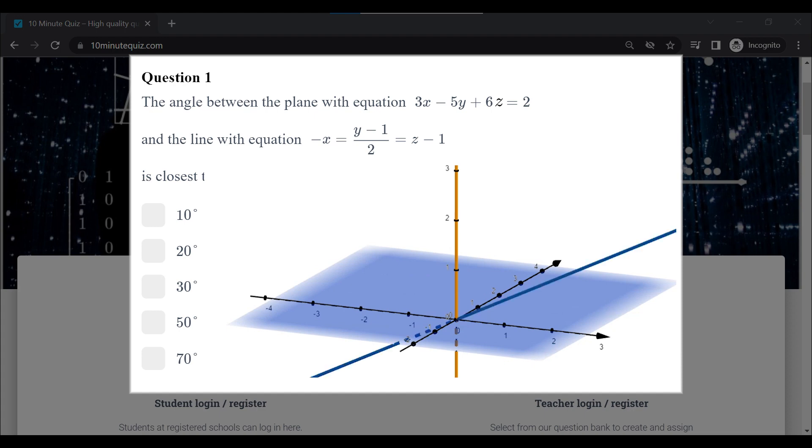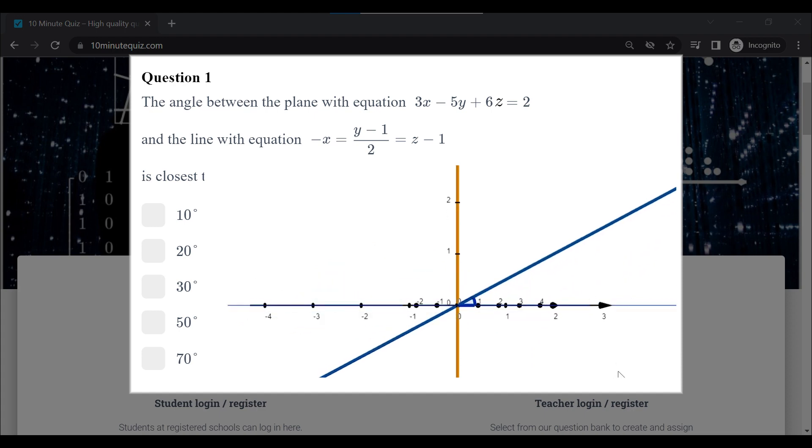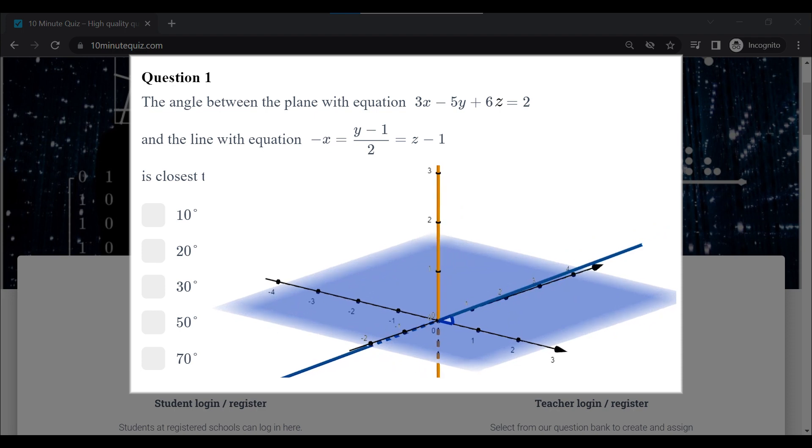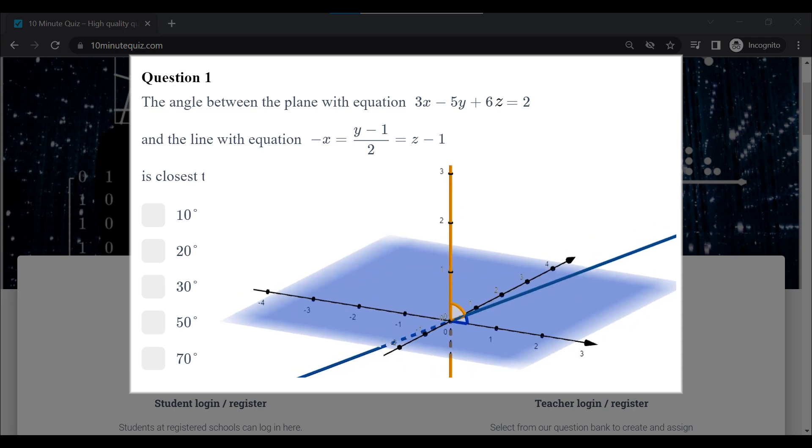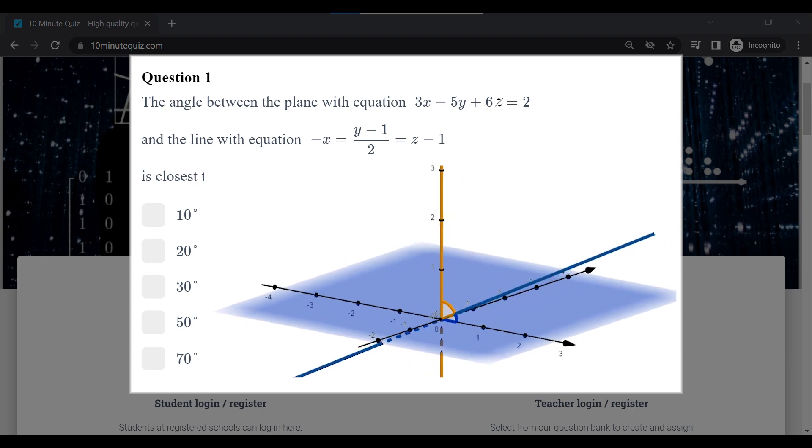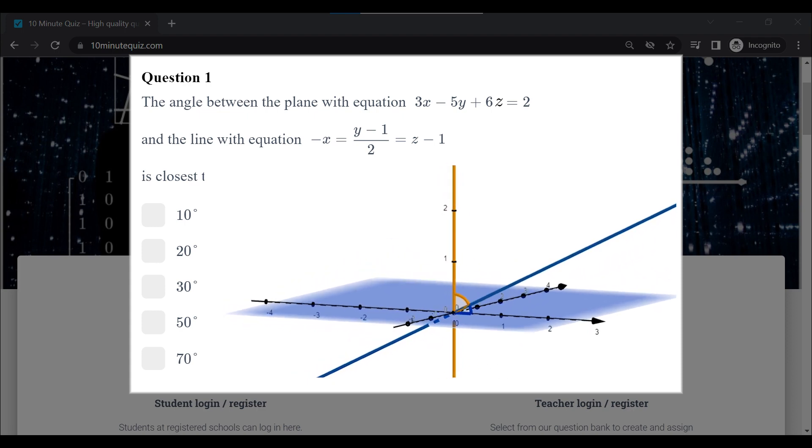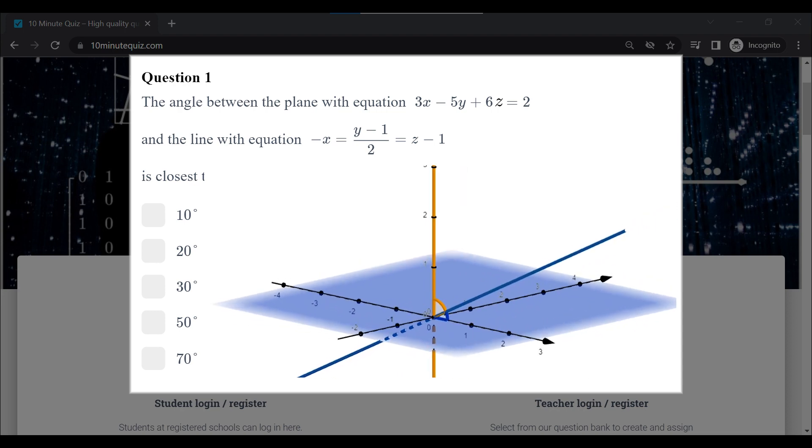Now if we consider a line, and remember what we want is the angle between the line and the plane. But if we can first find the angle between that line and the normal vector, can you see that actually that angle is going to be 90 degrees minus the angle that we want? So if we find the angle between the line and the normal, subtract that from 90 degrees, that will give us the angle between the line and the plane.